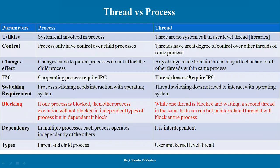Let's talk about the utilities and system calls involved. In the process, system calls are involved for creation, termination, and exit. We use the fork system call to create a process. Whereas if we use threads, there are no system calls required for user-level threads — only the libraries are required. In the language, we create a thread using library calls.